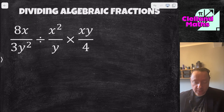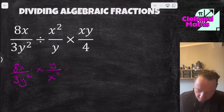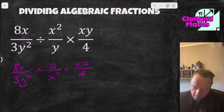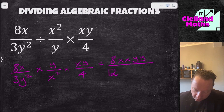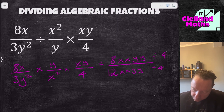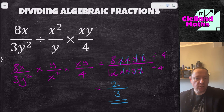Now we've got a divide and a times in the same expression. Change the first divide to a times and flip: ax over 3y squared, times y over x squared, times xy over 4. Putting it all together, the top is 8xxyy and the bottom is 12xxyy. Divide top and bottom by 4: all the x's and y's cancel completely. 8 divided by 4 is 2, 12 divided by 4 is 3. The answer is 2 thirds.